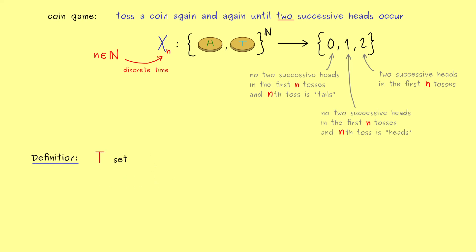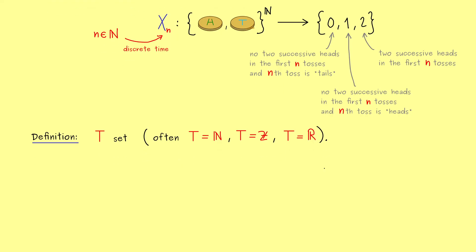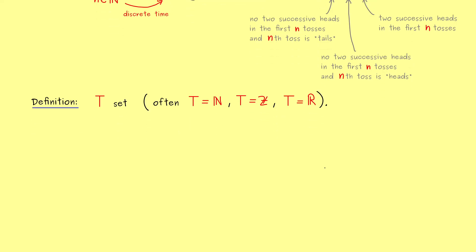So first what we have to fix is an arbitrary set and let's call it T. So it could be any set and often our interpretation is that this is the set of time points. Therefore often we have that T is equal to N or Z, which correspond to the discrete time steps, and on the other hand we can also have the continuous case where T is equal to R.